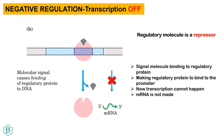Next condition — negative regulation with transcription OFF: the signal molecule binds to the regulatory protein, causing it to bind to the promoter. Now transcription cannot happen because the regulatory molecule is a repressor, and mRNA cannot be made.